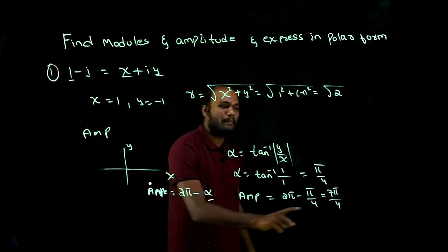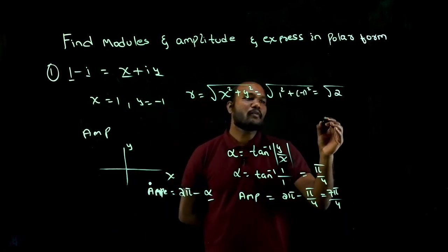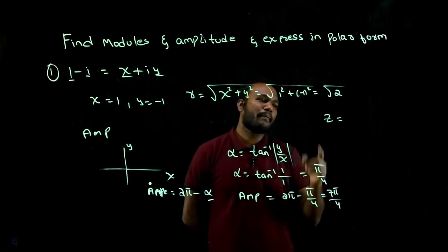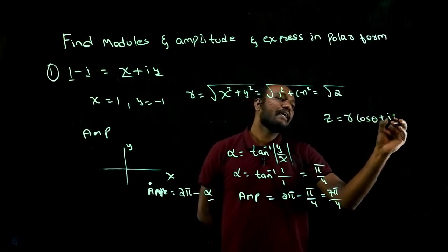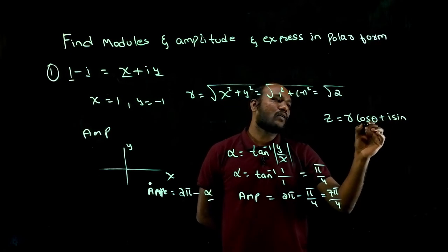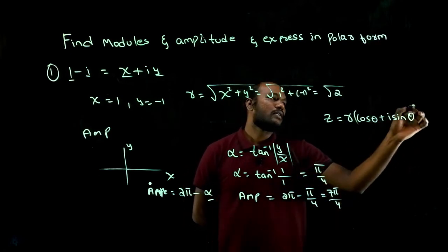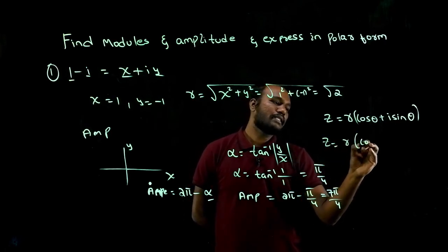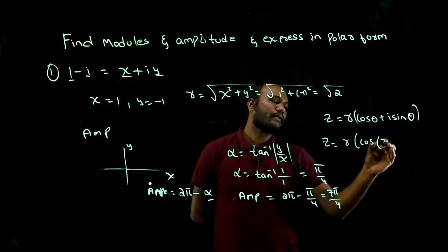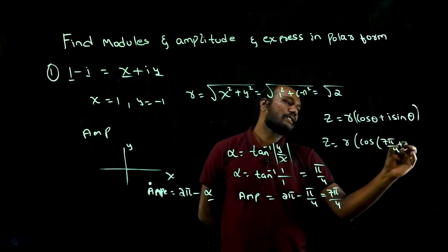Now when we know the amplitude, what's the polar form? P equals r into cos θ plus i sine θ. θ is the amplitude. So that equals r into cos 7π upon 4 plus i sine 7π upon 4.